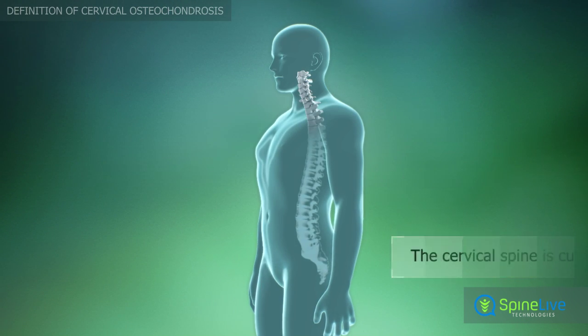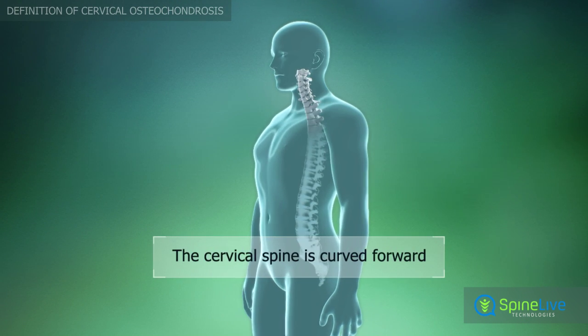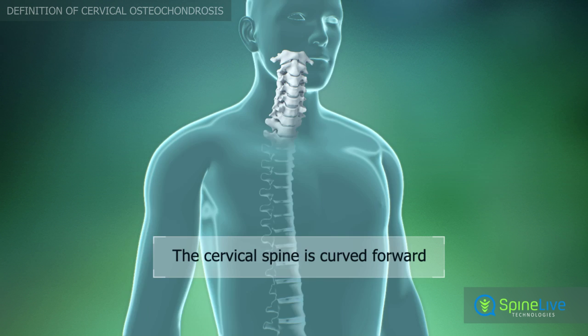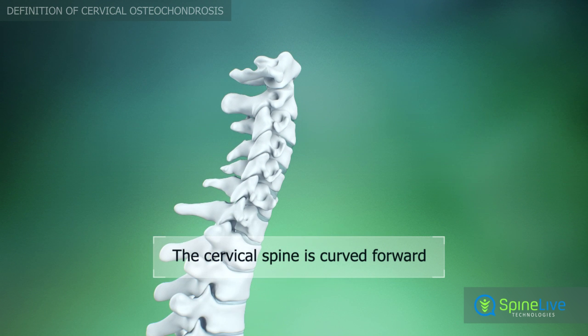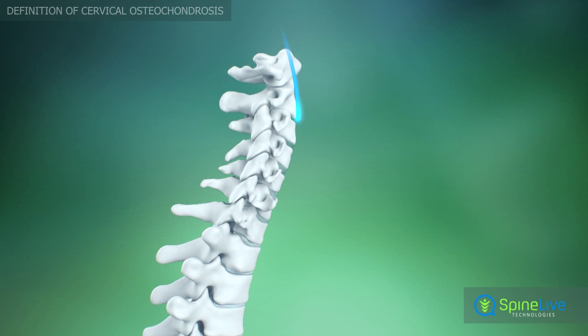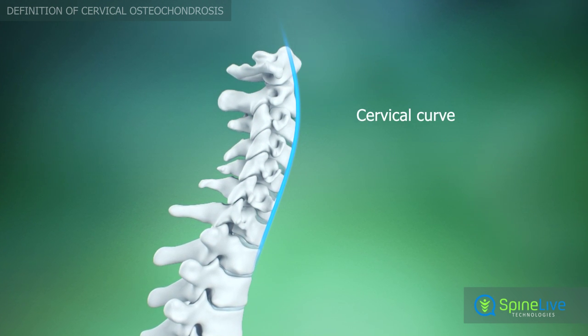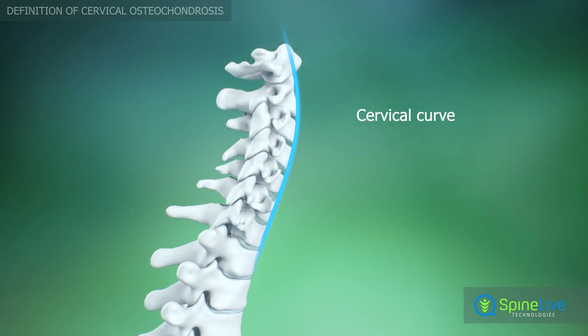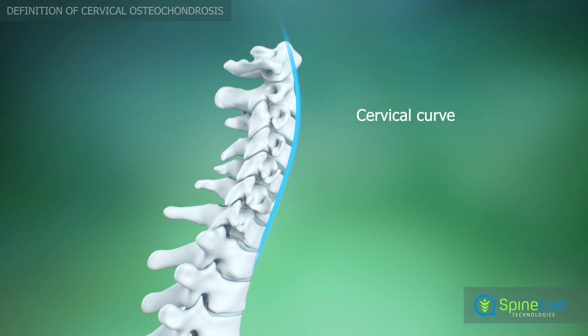The cervical region of the spine is curved forward. This curving helps to absorb pressure, vibrations, and shock that occur with movement.